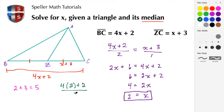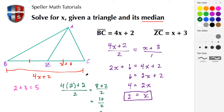We compute: 4 times 2 plus 2, divided by 2 — that's 8 plus 2 over 2, which is 10 over 2, which equals 5. Both BZ and ZC equal 5, verifying the answer. That wraps up this tutorial — if you found it helpful, please like, share, and/or subscribe. Thank you!